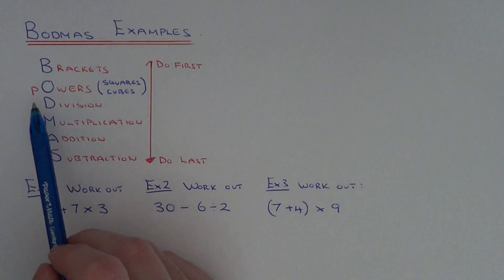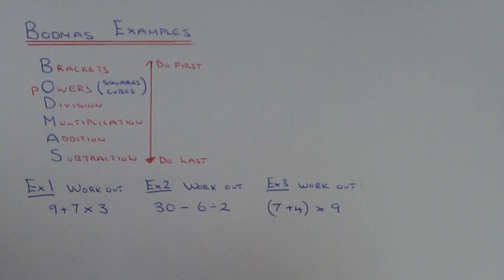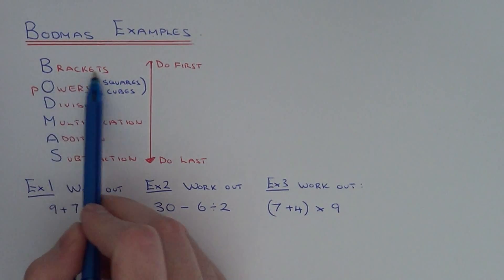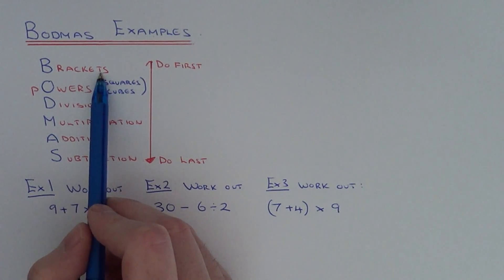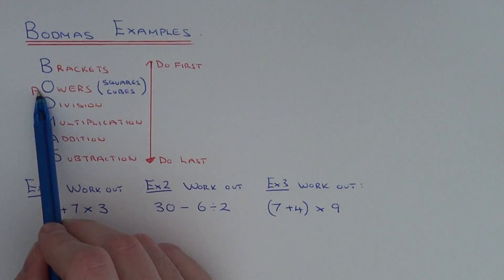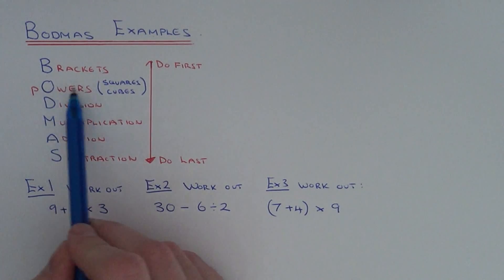The word Broadmass can be used to help you decide which order you carry out operations in. The B stands for Brackets, so anything in brackets you do first. Then you've got Powers, so the O stands for Powers.